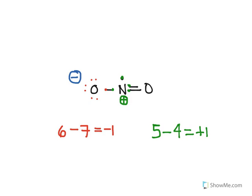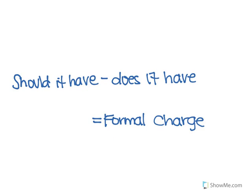You can use this exact same rule for every single atom you encounter and it's going to work perfectly. Just to recap: in order to figure out the formal charge of an atom, you take how many electrons it should have, subtract how many electrons it does have, and that gives you the formal charge. Thanks so much for tuning in and hopefully this helps you in chemistry. See you next time.